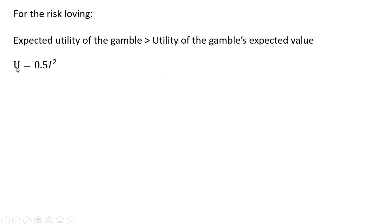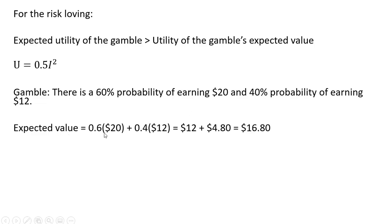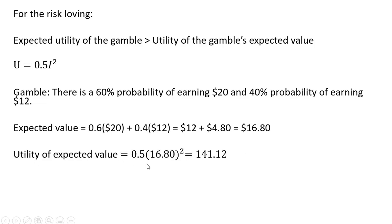So let's use this utility function. Here's our gamble: there's a 60% probability of earning $20 and a 40% probability of earning $12. The expected value is 0.6 times $20 plus 0.4 times $12, which equals $16.80. The utility of the expected value — plugging $16.80 into the utility function — gives us $141.12. That's the utility of the expected value, not to be confused with the expected utility of the gamble.